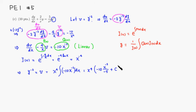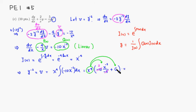Carrying that out: x to the fourth is outside. Integrating negative 10 x^(-6): add one to the power to get x^(-5), divide by negative 5, plus constant C. Simplifying, negative 5 on the bottom and positive 10 on top gives 2. Distributing x to the fourth: we get 2 x^(-1) plus C x^4, which is 2 over x plus C x^4.